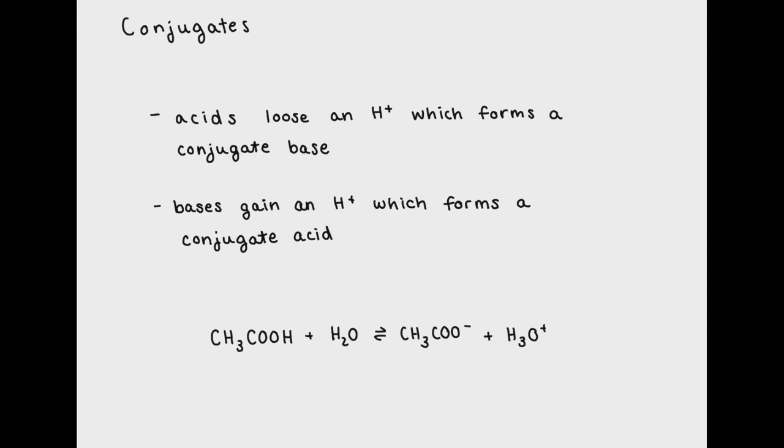Bronsted-Lowry theory also defines conjugate acids and conjugate bases. If an acid loses a hydrogen ion it becomes a conjugate base. Likewise, if a base gains a hydrogen ion it becomes a conjugate acid. Below I've written the formula for acetic acid and its dissociation in water. Acetic acid is a weak acid which then produces the conjugate base acetate.